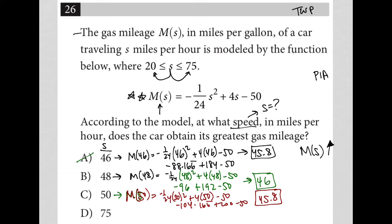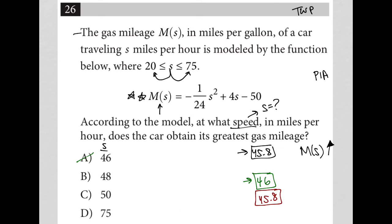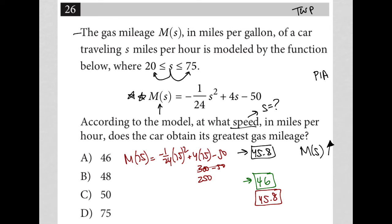How about choice D? M of 75 equals negative 1/24 times 75 squared plus 4 times 75 minus 50. That's 300 minus 50, so 250. And 75 squared divided by negative 24 gives negative 234.375, plus 250. That's only going to be about 15.625. So that's definitely not it.